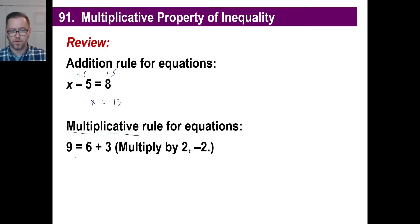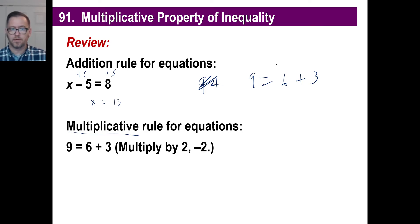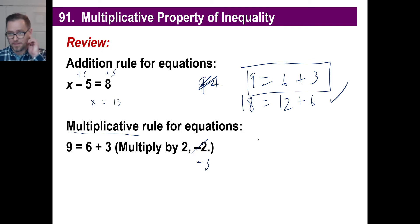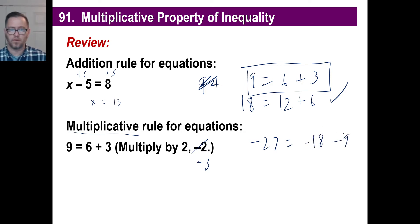Okay, it's an equation. Let's say 9 equals 6 plus 3 - that's true. If we multiply by 2, we get 18 equals 12 plus 6. That's also true. We could do it by a negative. Let's do it by negative 3. So 9 times negative 3 is negative 27, 6 times negative 3 is negative 18, 3 times negative 3 is negative 9. Is that true? Yes, it's true.